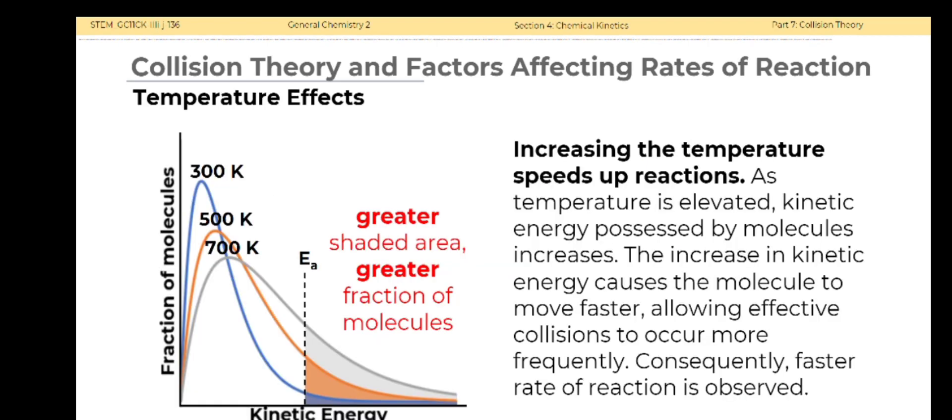Increasing the temperature speeds up reactions. As temperature is elevated, kinetic energy possessed by molecules increases. The increase in kinetic energy causes the molecule to move faster, allowing effective collisions to occur more frequently. Consequently, faster rate of reaction is observed. Looking at the distribution plot on the left, we can see that increasing the temperature increases the fraction of molecules that can achieve the activation energy, suggesting that the energy barrier is easier to overcome and the reaction proceeds with a faster rate.